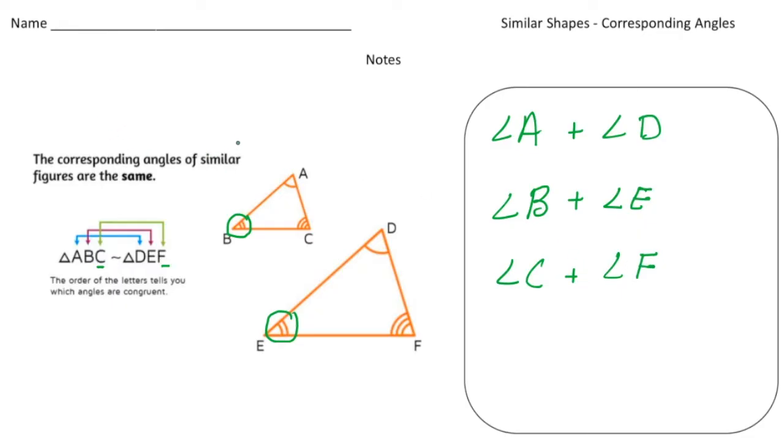So finally, if you please box this in, this is a key thing to remember. So corresponding angles of similar figures are the same. They're exactly the same. So if angle A was 60 degrees, angle D is 60 degrees. If angle C is 70 degrees, that means angle F is 70 degrees.